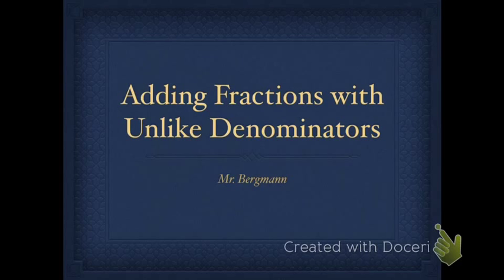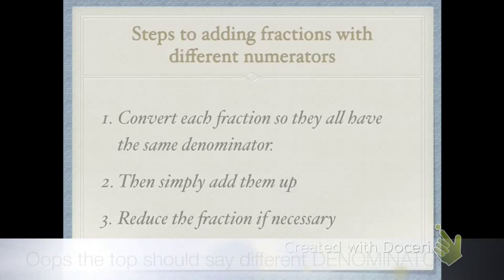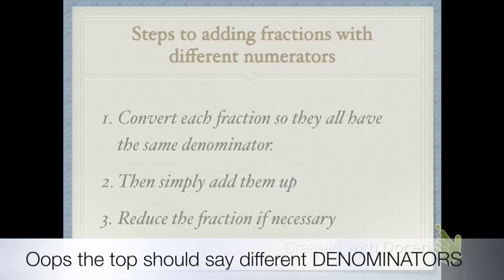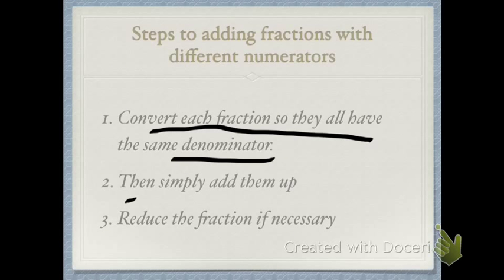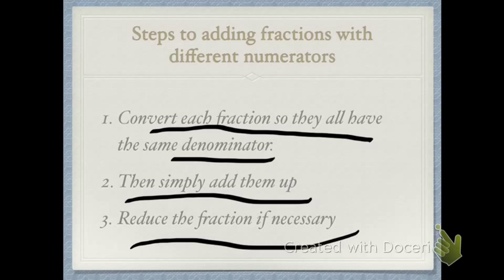The key to this whole thing is these sets of rules that I want to share with you. So if you are trying to add unlike denominators, there are three key things you need to do. Number one, convert each fraction so they all have the same denominator. Number two, simplify and simply just add them up and then lastly reduce the fraction if necessary. So let's do some practice.